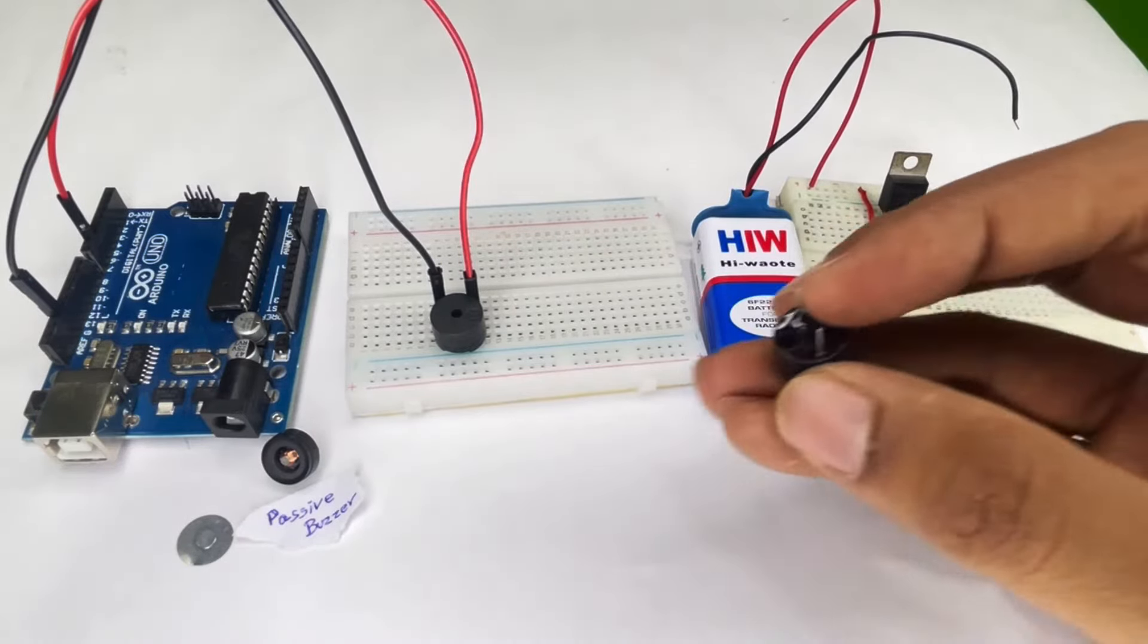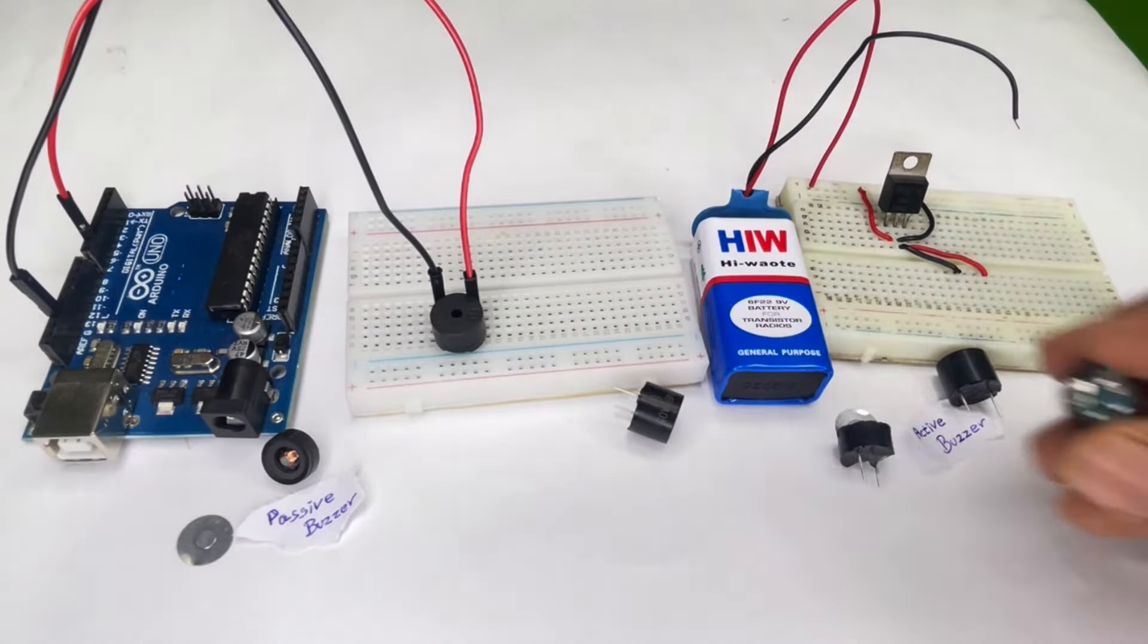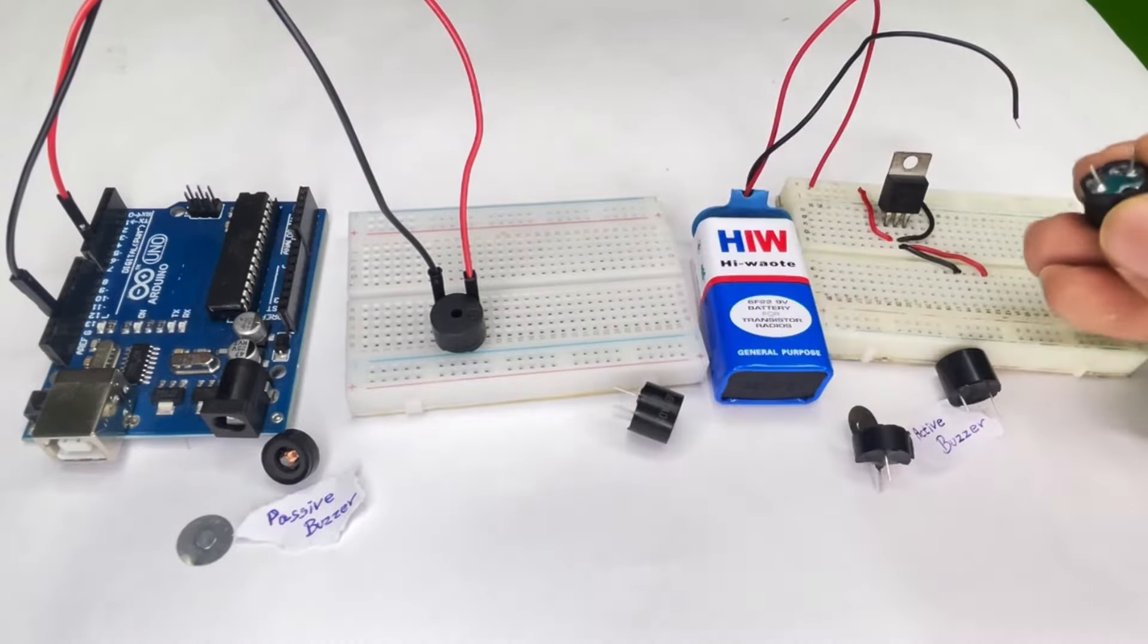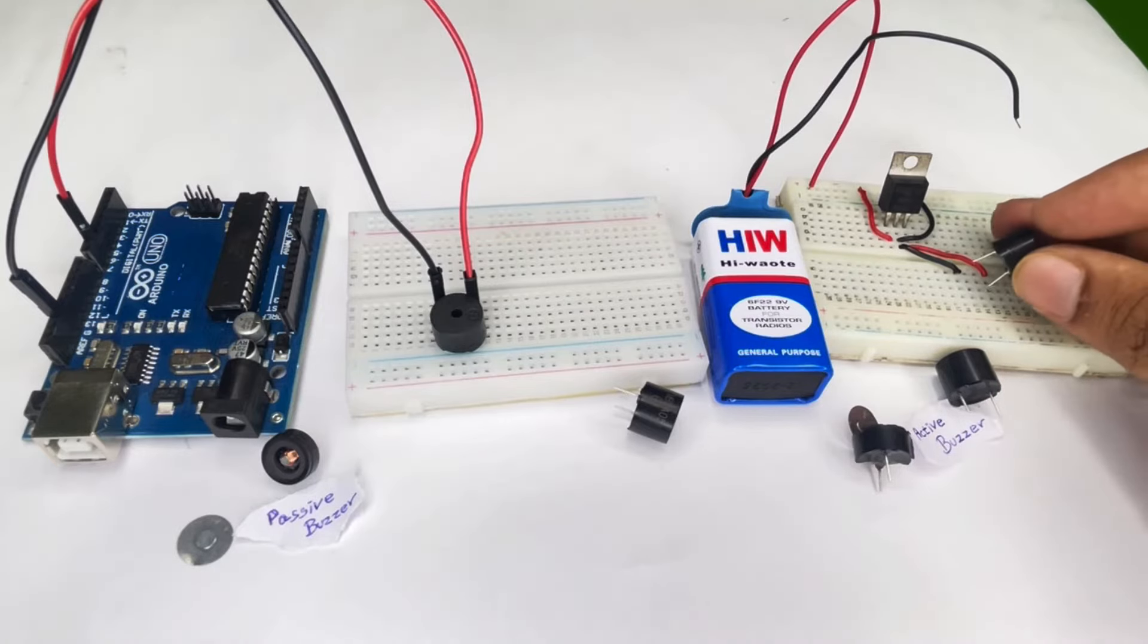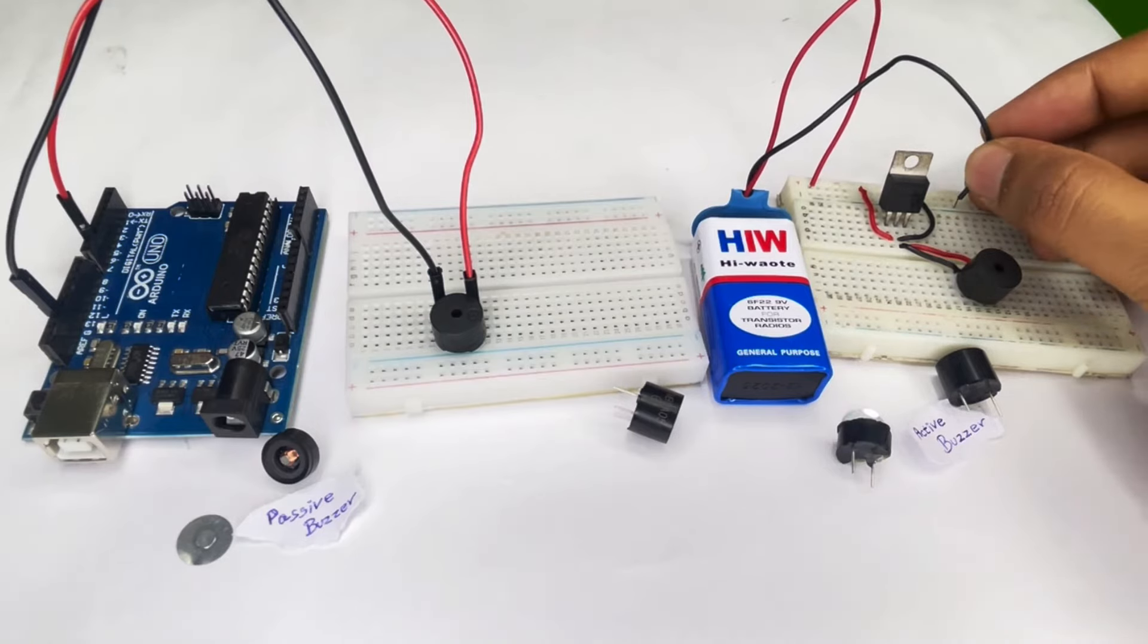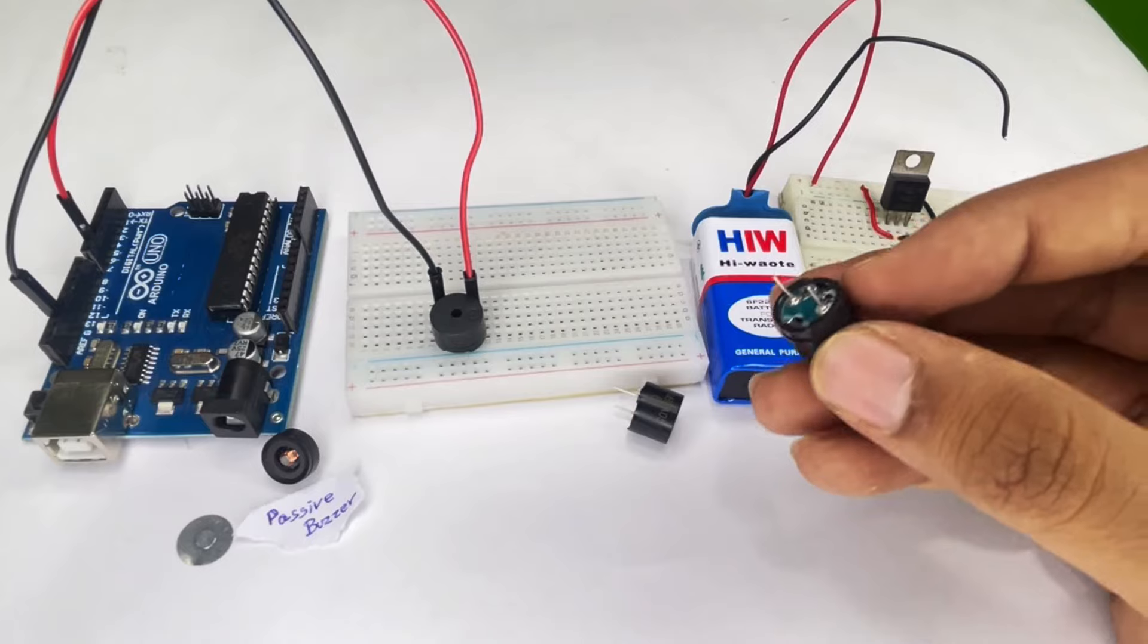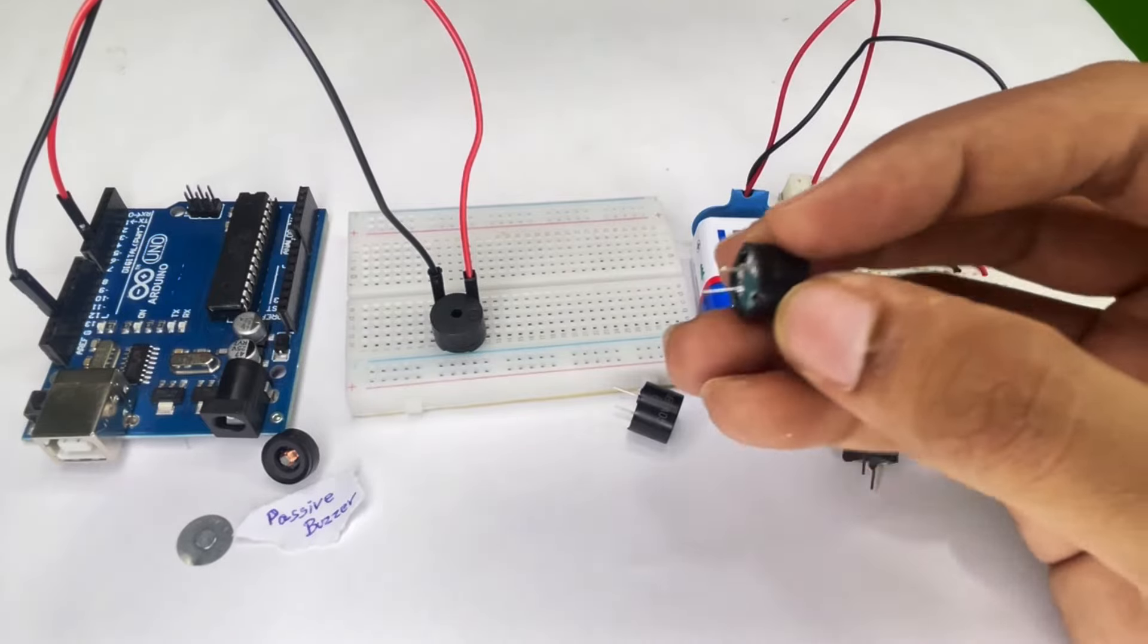Now if I replace this active buzzer, which has a plain finish on the bottom, with a passive buzzer which I have over here, let me quickly replace this. And now if I try the same circuitry again, you will see nothing happens.